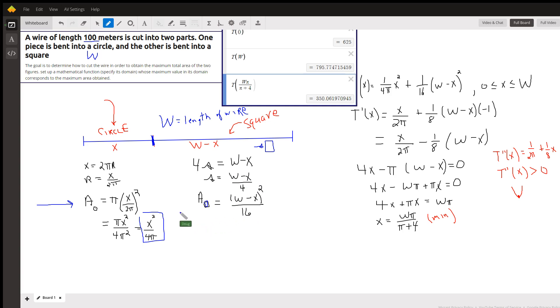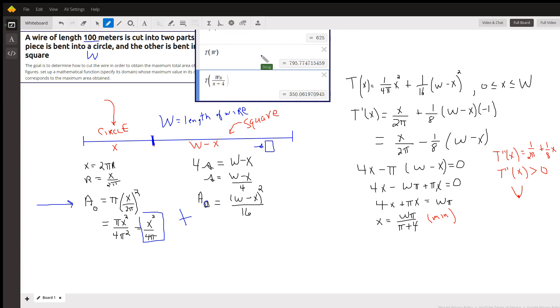And so by adding these two expressions together, we have a formula for the total area of the two figures. So let's see here, I kind of ran out of room here. Here we go, so there's the function total area.